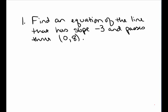In this video, we'll find the equations of lines when we're given different information about those lines. In the first problem, we're asked to find the equation of a line that passes through the point (0, 8) and has a slope of negative 3.